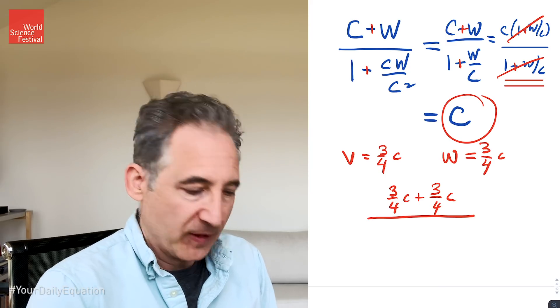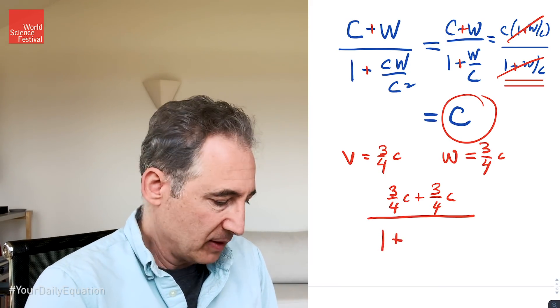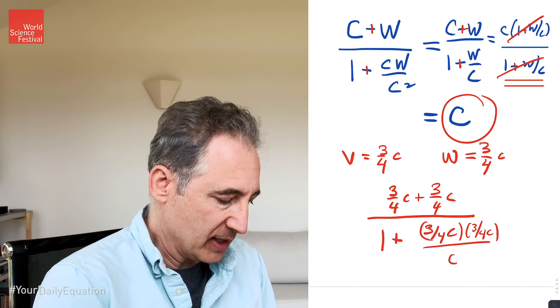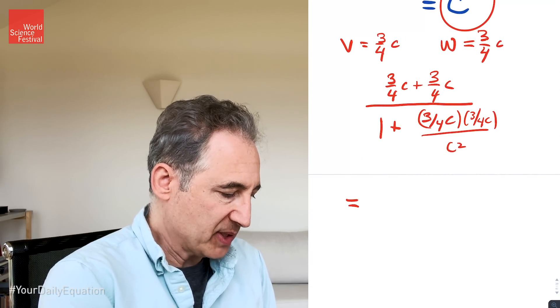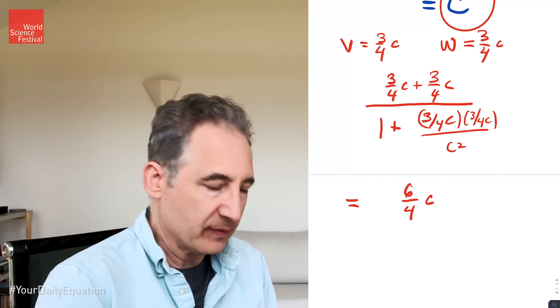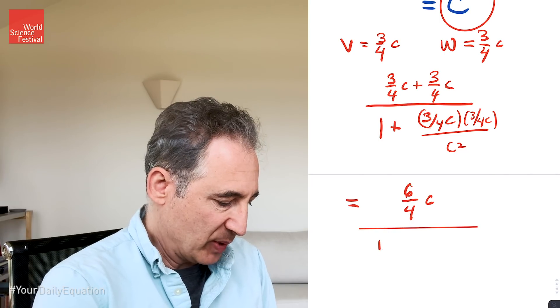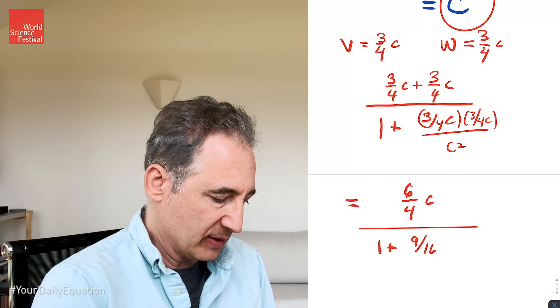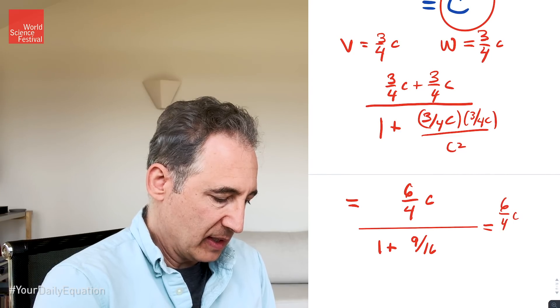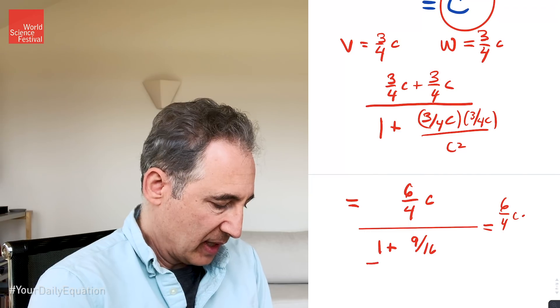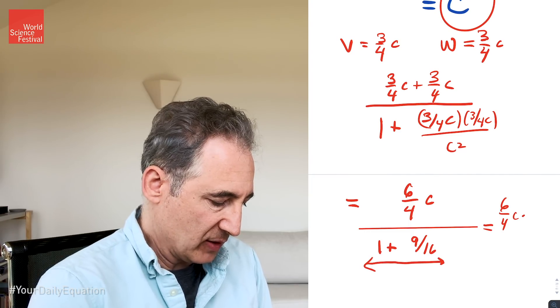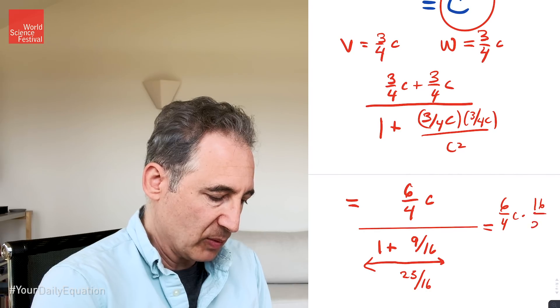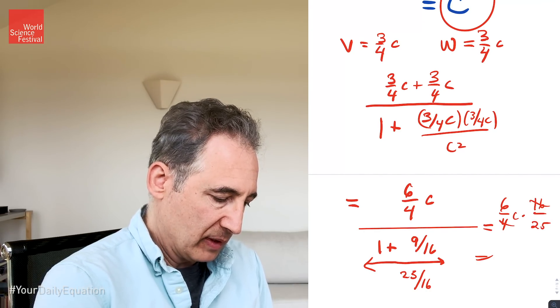Well what does Einstein do? He says hang on, you need to correct this by 1 plus vw over c squared. vw now is 3/4 of c times 3/4 of c divided by c squared. And now we can work this out. Upstairs we have the offending 6/4 of the speed of light. But what do we get downstairs? Downstairs we get 1 plus 3/4 times 3/4 is 9/16, and the c squareds cancel. So we get 6/4 c times, what's 1 plus 9/16? Well this guy just gives us 16/16 plus 9/16, which is 25/16, which we can bring upstairs as 16/25.